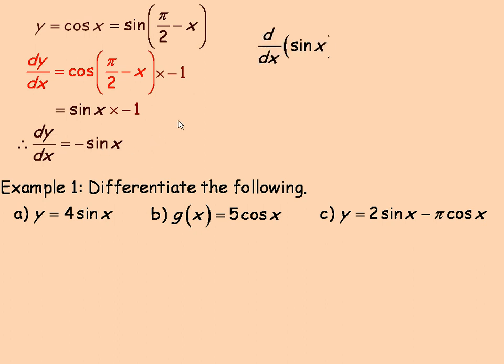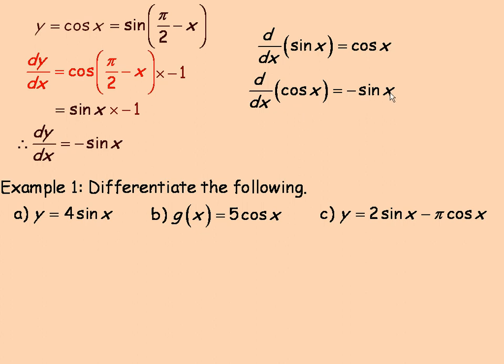To summarize: the derivative of sine x is cos x, and the derivative of cos x is negative sine x. They're almost each other's derivatives, except the derivative of cos x carries a negative sign.